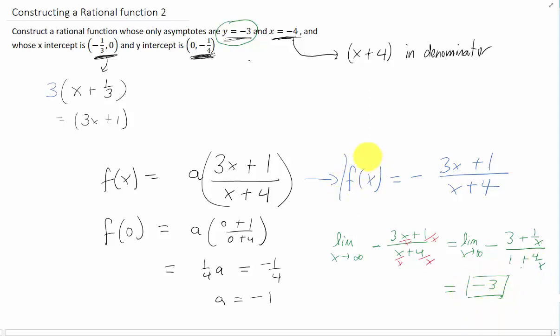So we constructed a rational function, a ratio of polynomial functions that has a vertical asymptote at x equals negative 4 because of this denominator. It has a 0 of negative 1 third 0 because of the numerator. And because of the negative sign that we put in front, plugging in x equals 0 now gives us negative 1 fourth which is what we needed. And taking a limit as x goes to infinity or checking the horizontal asymptote gives us the negative 3 that we wanted. Okay, good job.